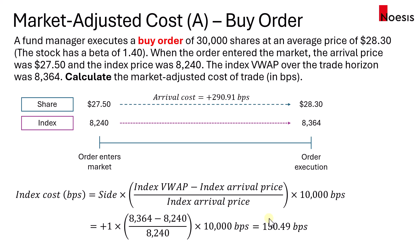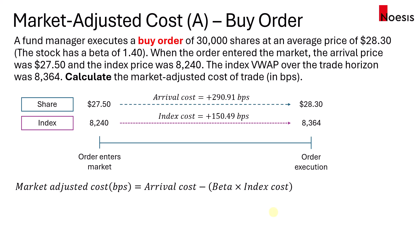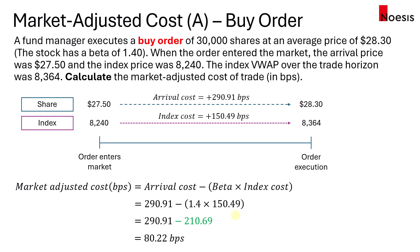During that same trade horizon, the index appreciated by 150.49 basis points. So in a way, the market did contribute a bit to the arrival cost. Without the index cost — without the general market movement — what would the arrival cost be? This is where it gets to the market adjusted cost. We take the arrival cost, then minus the stock beta multiplied by the index cost. Substituting the arrival cost, index cost, and beta: 1.4 multiplied by 150.49 gives 210.69. So removing the effect of the general market movement on the stock, the arrival cost would have been lower by 210.69 basis points, meaning the trader would have performed better relatively. In absolute terms, 80.22 basis points is still considered underperformance because it's a positive cost.